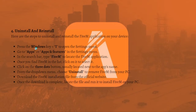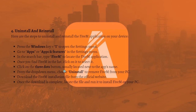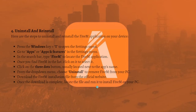First, press the Windows key plus I to open the Settings menu, then go to Apps or Apps and Features. In the search bar, type FiveM to locate the application. Once you find it in the list, click on it, then click the three-dots button next to the app's name and choose Uninstall from the drop-down menu to remove FiveM from your PC. Then download the FiveM installation file from the official website, locate the downloaded file, and run it to install FiveM again.